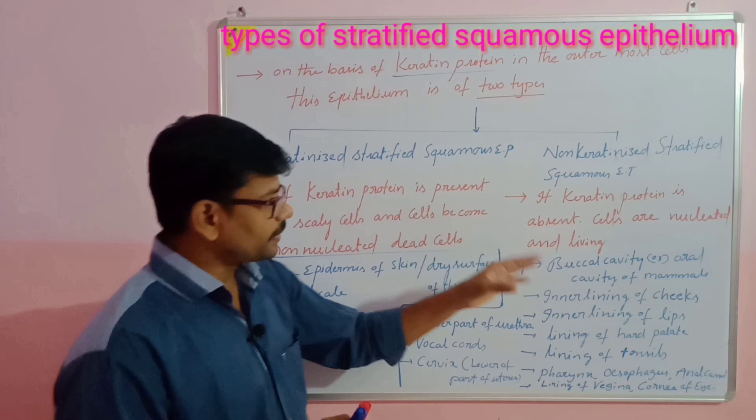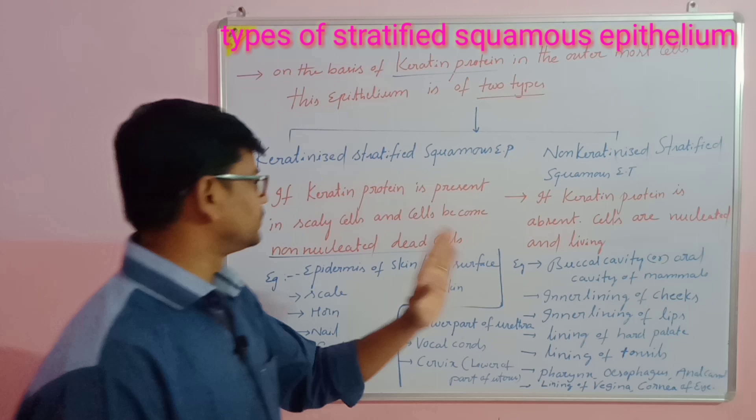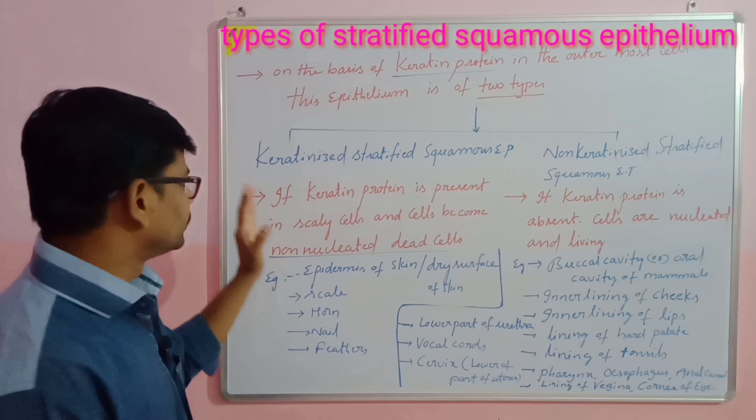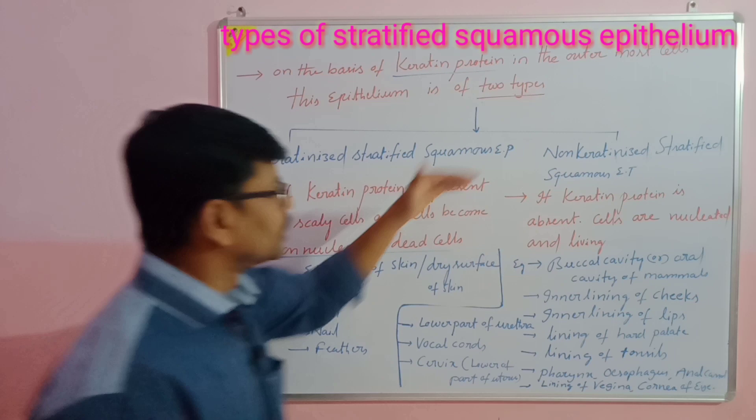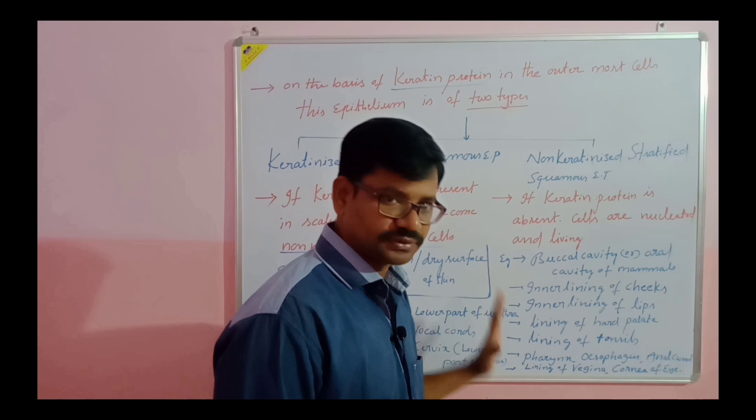All these parts are made up of non-keratinized stratified squamous epithelium. The major difference between keratinized and non-keratinized stratified epithelium is: in keratinized, keratin is present and cells are dead; in non-keratinized, there is no keratin but cells are living. That is the major difference. Thank you.